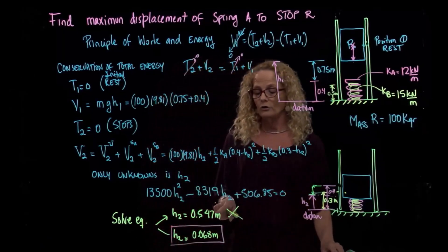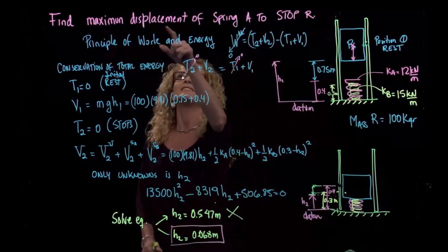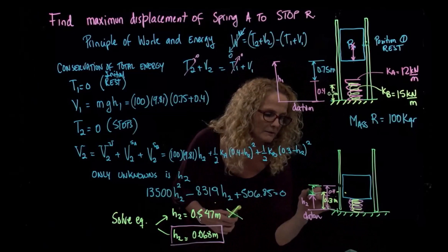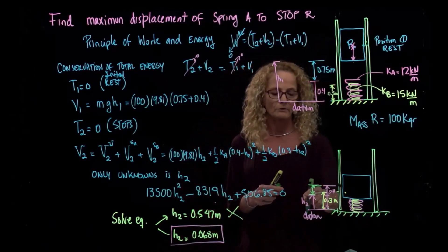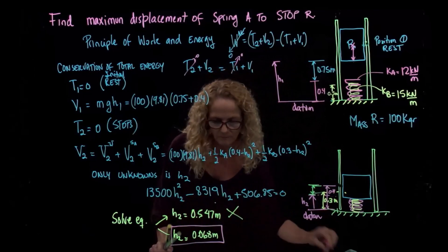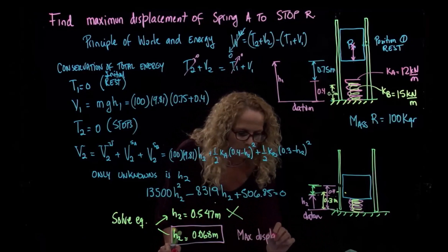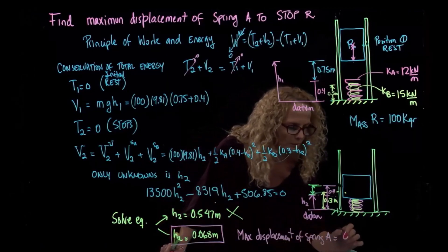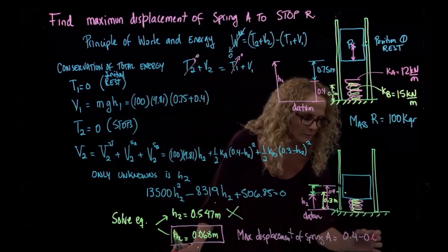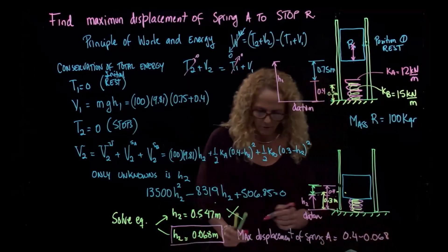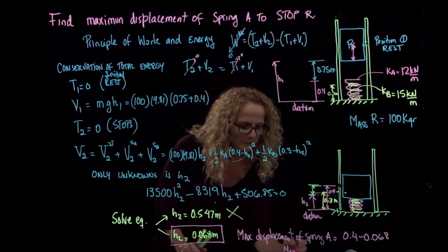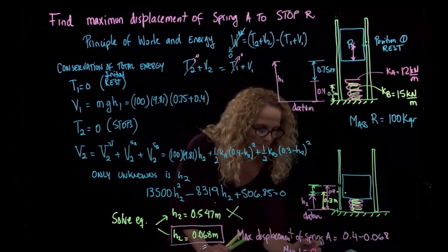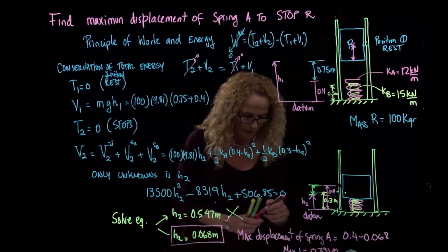But that's not what we are being asked. What we are being asked is the maximum displacement of spring A. The maximum displacement of spring A is this one here that I wrote in green. That will be the maximum displacement, which is 0.4 minus that. So the maximum displacement of spring A is equal to 0.4 minus that distance that I got, 0.068. Therefore, finally, the maximum displacement is equal to 0.331 meters.